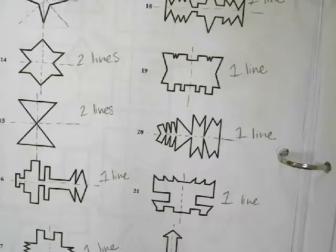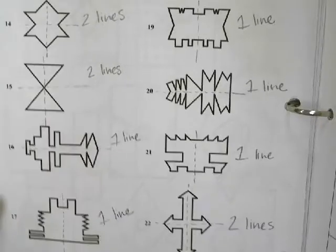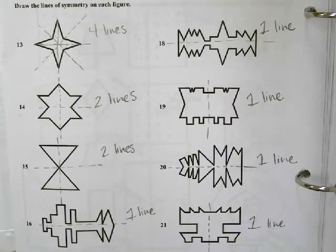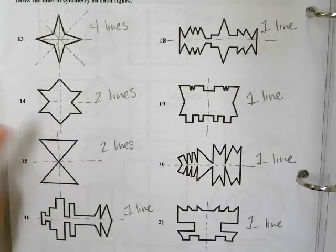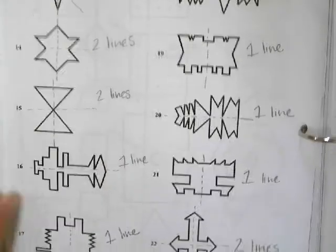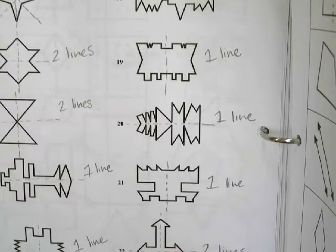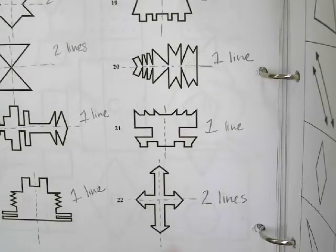We went on to do page 77. We had four lines of symmetry on this one, two lines here, one line there, and so on. These were a little bit simpler to do; the only one that was different was two.